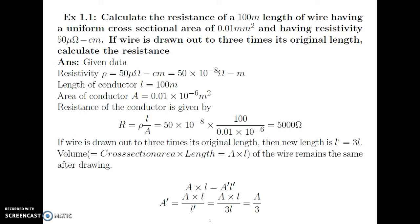In the next part, if the wire is drawn out to 3 times its original length, then the new length L' is equal to 3 times the original length. Keep in mind that if the wire is drawn into 3 times its length, the volume is not going to change — the volume of the wire remains the same after drawing.